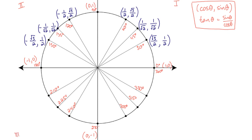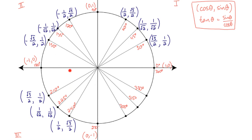In quadrant 3 we use related acute angles of 30°, 45°, and 60°. We find cos and sin of each, but in quadrant 3 we're on the negative side of both the x-axis and the y-axis. So all x-coordinates are negative and all y-coordinates are also negative. That means both cosine and sine are negative for all angles in quadrant 3.